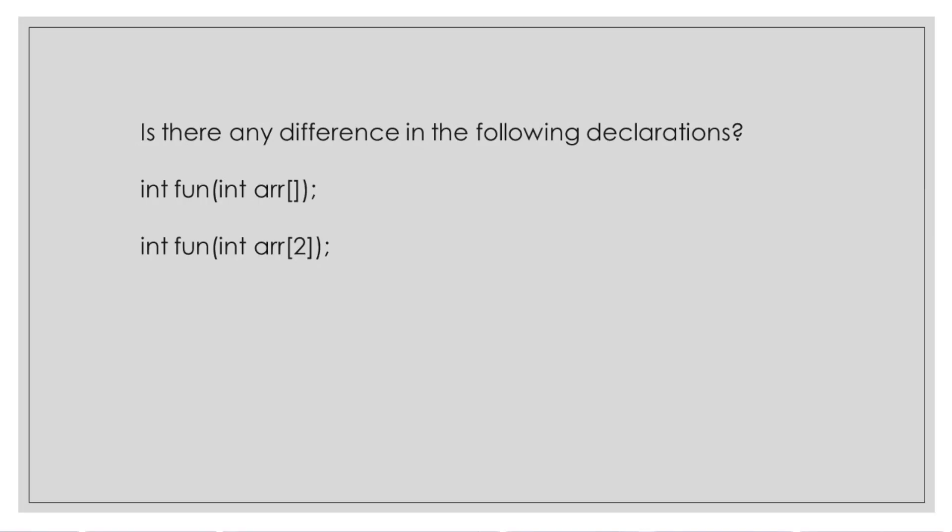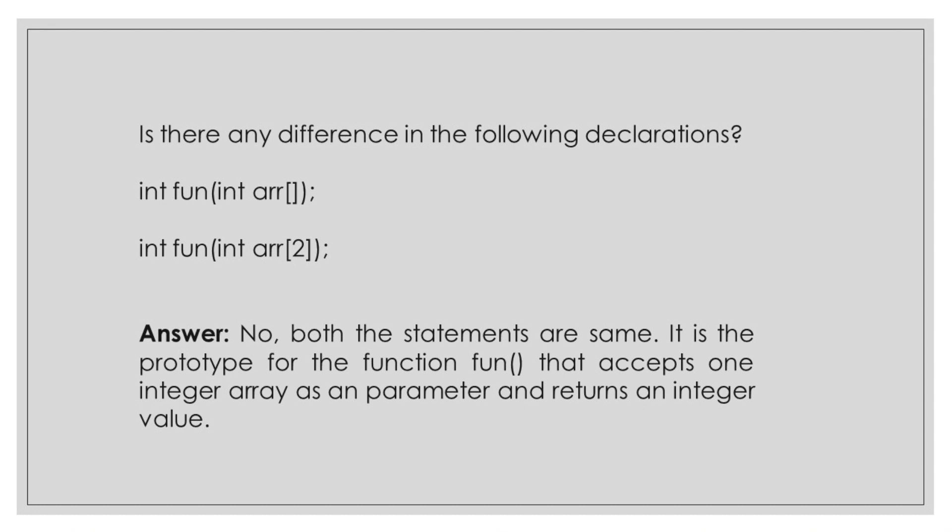One more question. Is there any difference in the following declarations? Integer fun int arr[], and thereafter integer fun int arr[2]. The argument list is differing. The answer is no. Both the statements are correct. It is the prototype for the function fun. We know that whenever we use a function we declare the function first. So both the lines are prototypes, function prototypes, and accepts one integer array as the parameter and returns an integer value. So it is accepting the array as a parameter and returns an integer value. In both cases it is returning integer value. So both are correct.